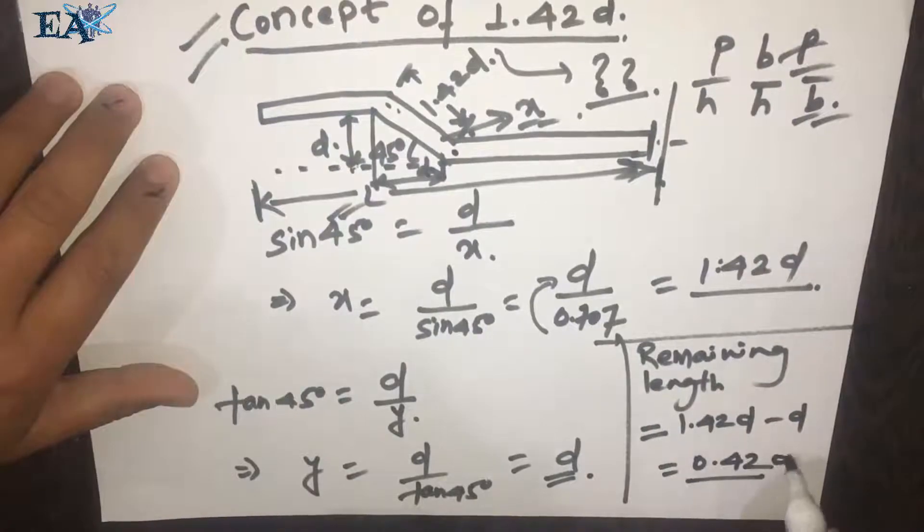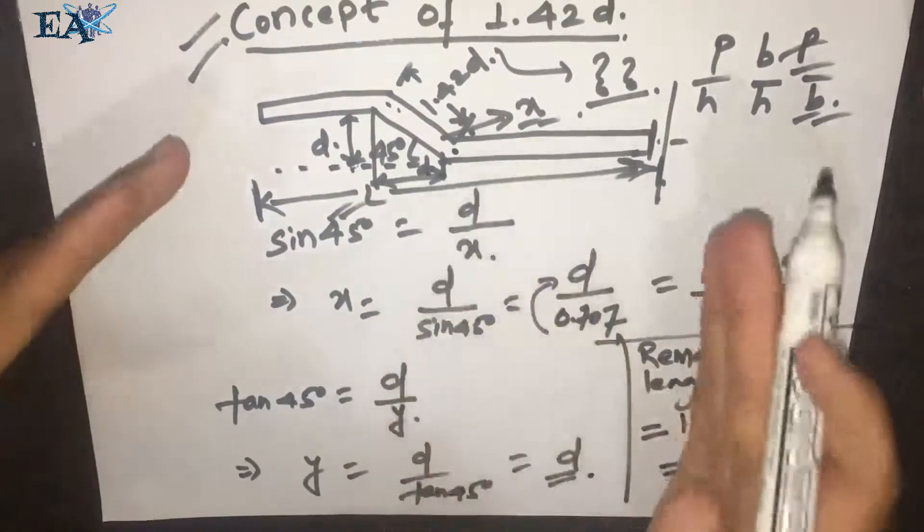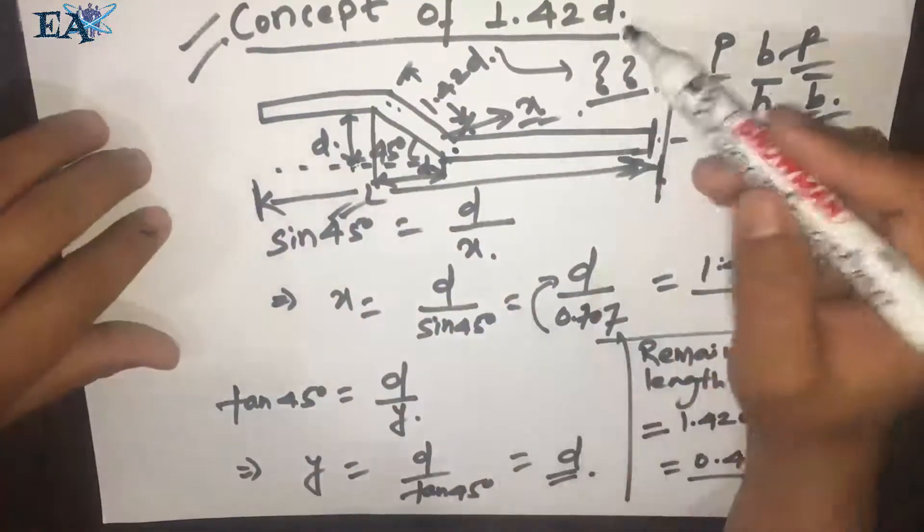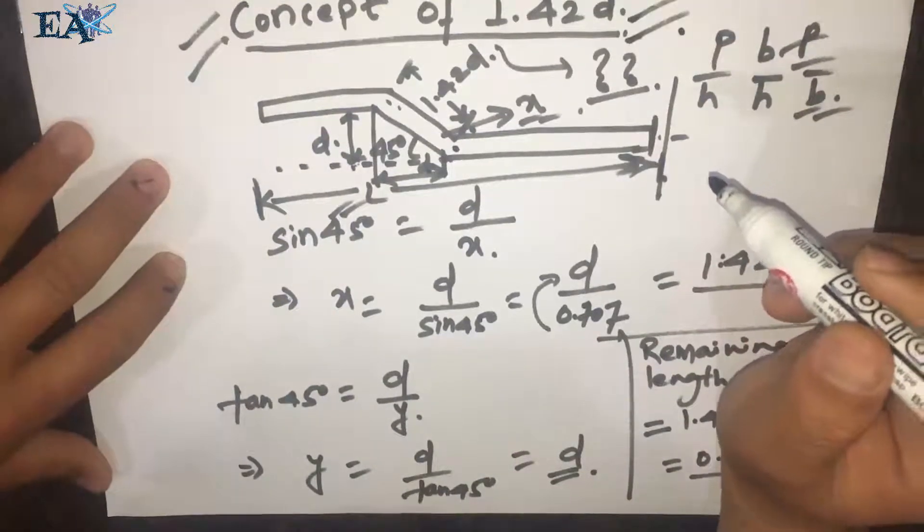So to get the total length of the bar, you have to add 0.42D to your L. This is the concept of 1.42D. Hope this video was helpful. Thank you for watching, take care.